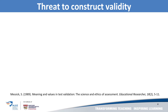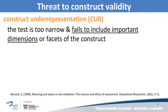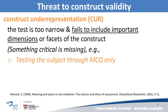The second threat to construct validity is construct underrepresentation. This occurs when a test design is too narrow or fails to include important dimensions or facets of the construct — so something critical is missing. For example, in a teaching of math, we only test the subject through MCQ, and so there is construct underrepresentation in the task design.